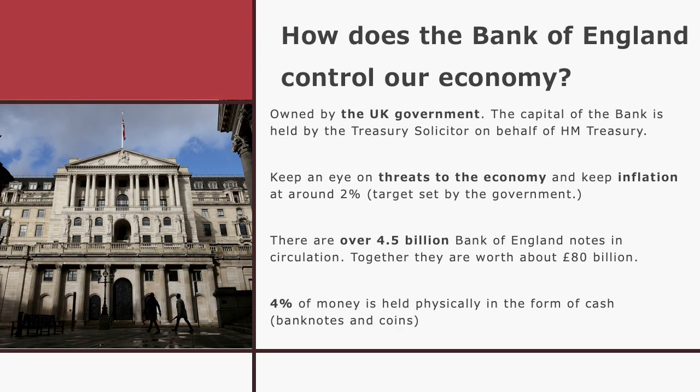So the Bank of England — what is it and what influence does it have over our economy? Remember, the economy is the state of the balance between production, consumption, and the supply of money. The bank is owned by the UK government; its capital is held by the Treasury Solicitor on behalf of His Majesty's Treasury. The Bank of England keeps an eye on threats to the economy and keeps inflation at around 2% — that's the target set by the government.